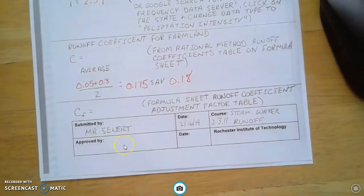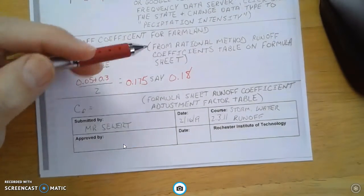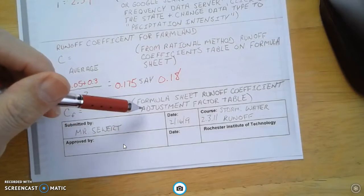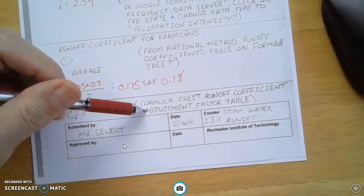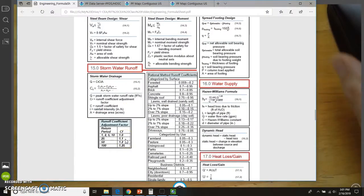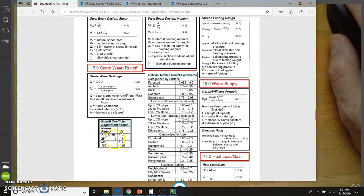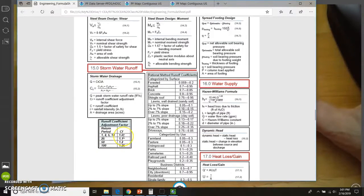Next thing, we have to find out what the CF is. This comes from our formula sheet. It's the runoff coefficient adjustment factor. I'm going to go to that formula sheet again. Here is the runoff coefficient factor. What you're looking for is the return period, which is the number of years. Remember, we're solving for a 25-year storm. So here is 25, and that has a factor of 1.1.